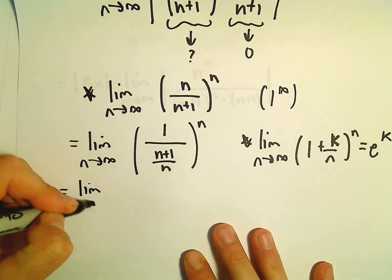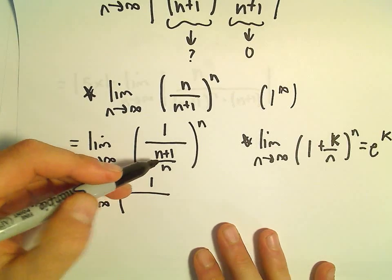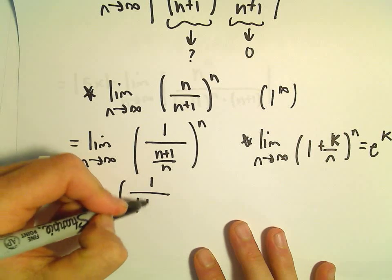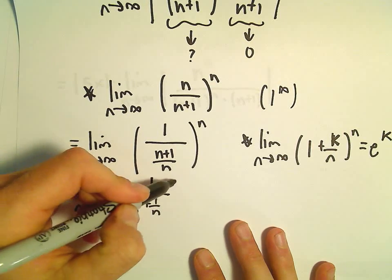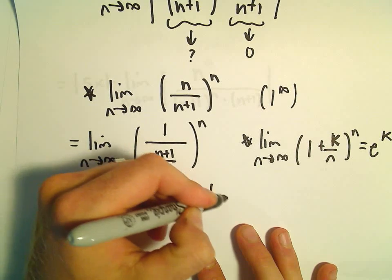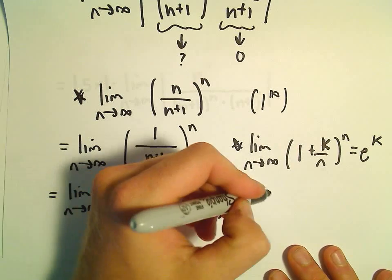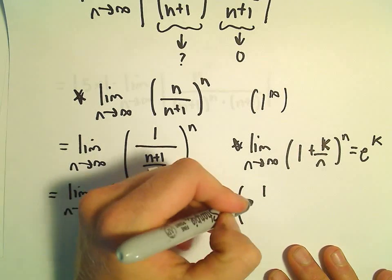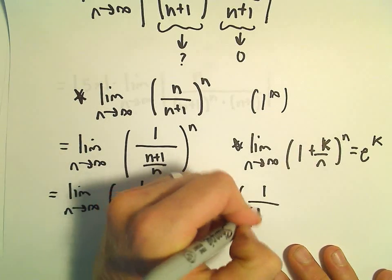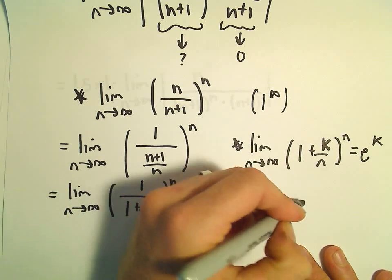So this is the limit as n goes to infinity. We would have 1 over, well, now I can break up the fraction. n over n is 1 plus 1 over n. Again, this is all being raised to the n. So this is going to be the limit as n goes to infinity, we would have 1 to the n, which is just 1, and then in the denominator we would have 1 plus 1 over n raised to the n.